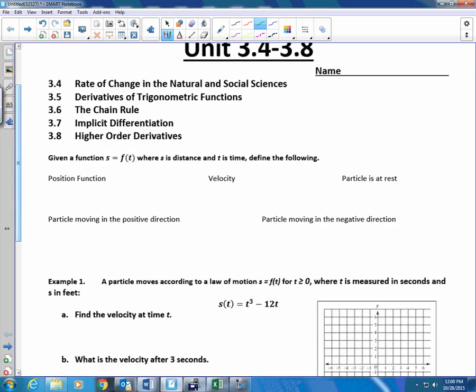We're going to start with something called rate of change in the natural and social sciences. This is really important. We're going to build off this for times to come. This piece you're going to see again, multiple times.